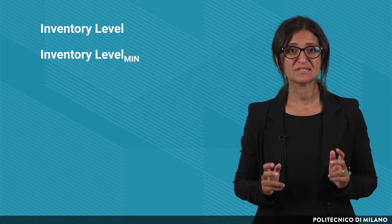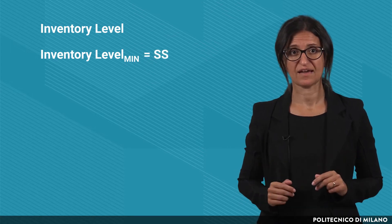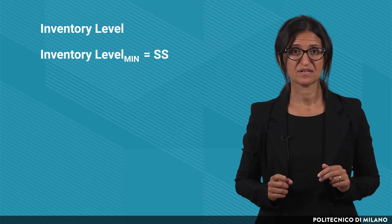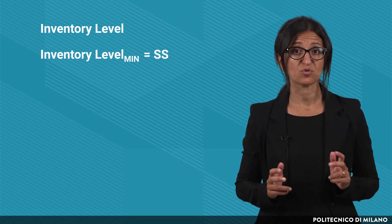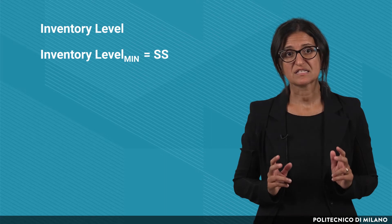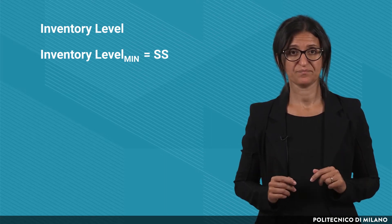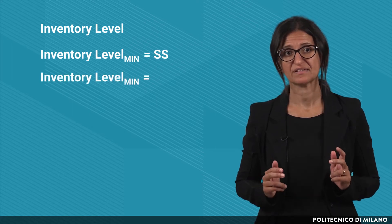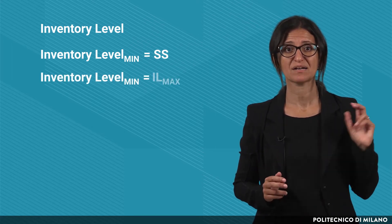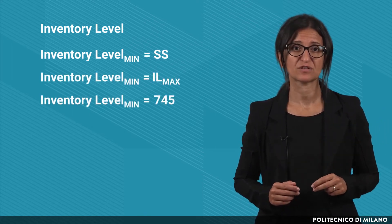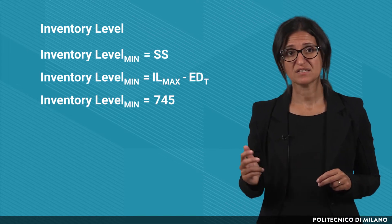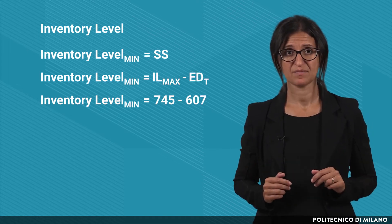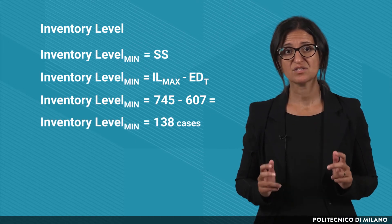The minimum value is instead equal to the safety stocks level. The minimum and maximum levels of inventories differ by the average order quantity, that is the expected demand during t. Therefore, the minimum value of the inventories is calculated as the difference between its maximum value, 745 cases, and the expected demand during t, 607 cases, resulting in 138 cases.